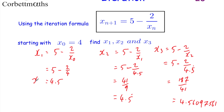So our values are: x1 = 4.5, x2 = 4.5555... recurring, and x3 = 4.56097561... And if you got those, well done.